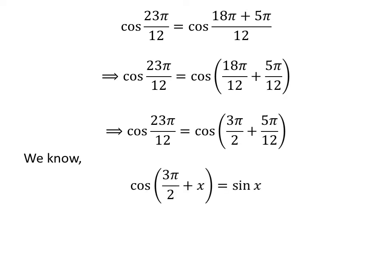We know the trigonometry identity cosine of 3 times pi upon 2 plus x is equal to sine of x. The proof of this trigonometry identity is given in the video appearing in the upper right corner, and the link is also given in the description section. So, cosine of 23 times pi upon 12 is equal to sine of 5 times pi upon 12.